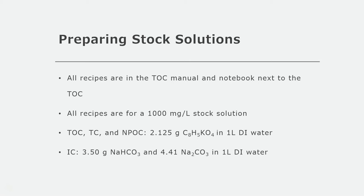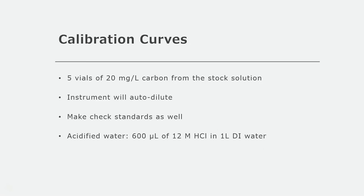All your chemicals should be dry and reagent grade. For your calibration curve, you're going to take that 1,000 mg per liter stock solution and dilute it to 20 mg per liter. Your calibration curve will be 5 vials of this 20 mg per liter solution, and the instrument will auto-dilute from this to make the actual calibration curve. Be sure to make check standards like 1, 2, and 5 mg per liter solutions as well to use throughout your run — this will help you make sure that your data is accurate.